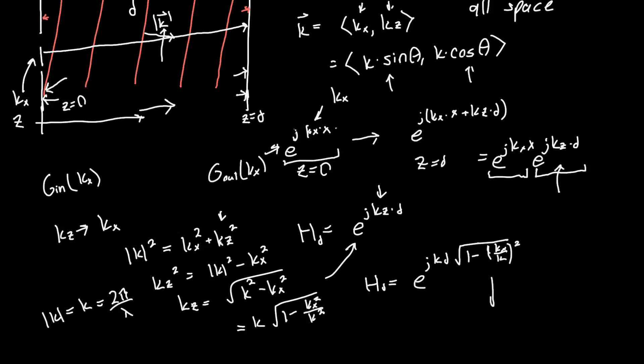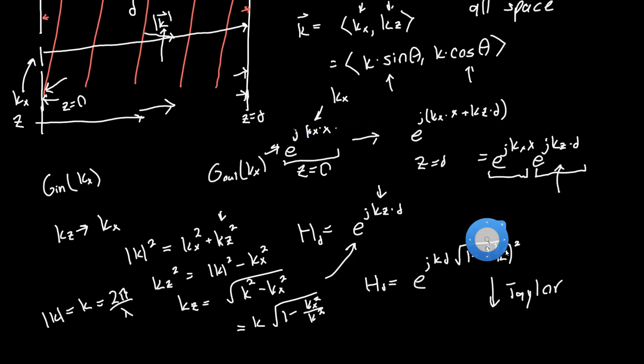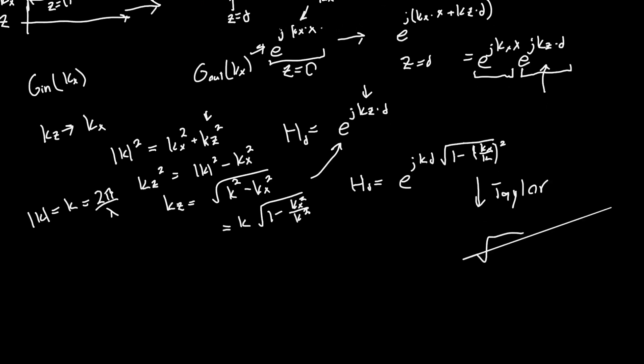And now if we Taylor series expand this square root term, so 1 plus epsilon, so 1 plus epsilon is approximately 1 plus 1 half epsilon, then this becomes e to the j kd times e to the minus j, and now we've got a kx squared d divided by k, or divided by 2k.